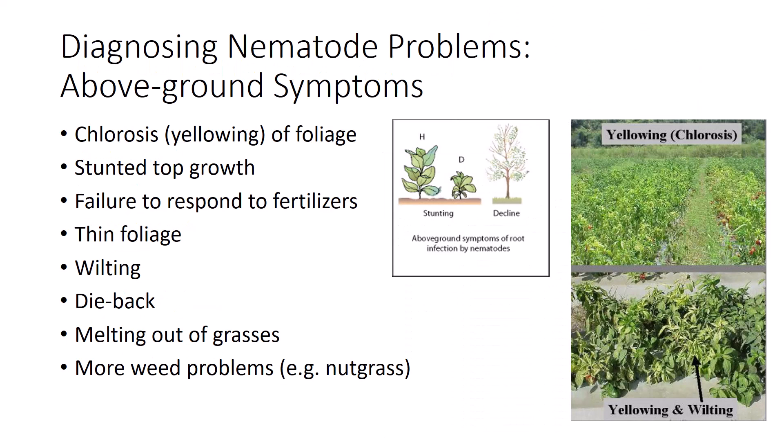Determining if nematodes are involved in a plant growth problem is difficult because few nematodes cause distinctive diagnostic symptoms. A sound diagnosis should be based on as many factors as possible: symptoms above and below ground, field history, and laboratory assay of soil and/or plant samples. It is rare that above-ground symptoms alone give sufficient evidence to diagnose a nematode problem in the roots. However, they are important because they are almost always the reason that nematode problems are first noticed.